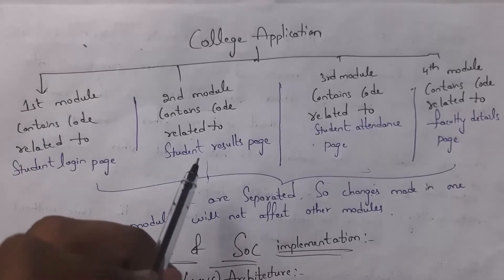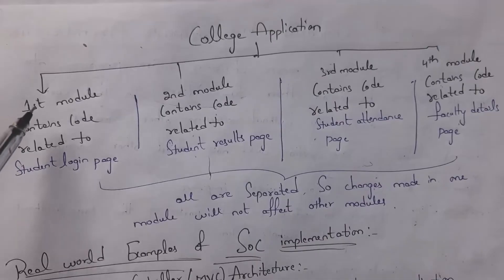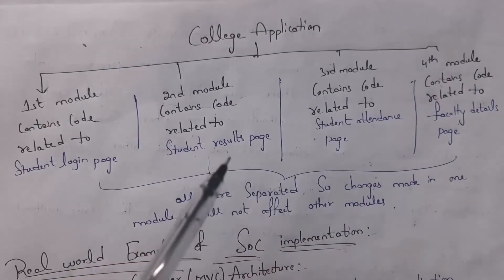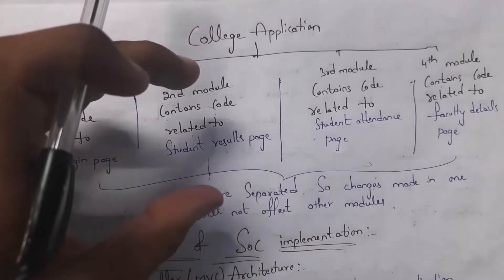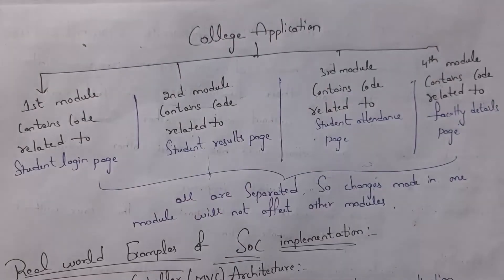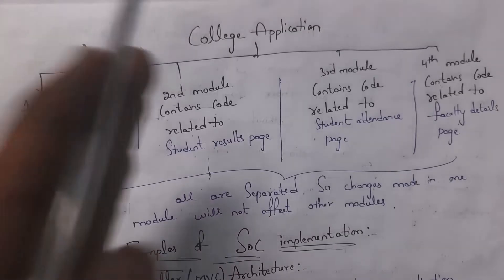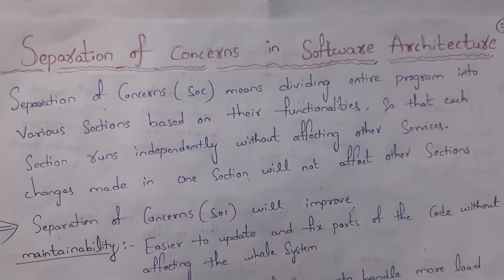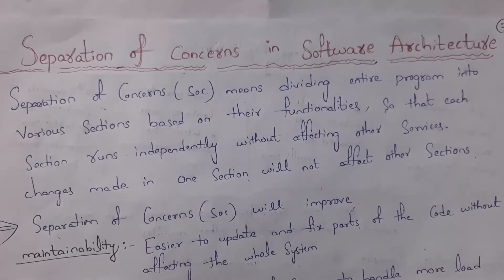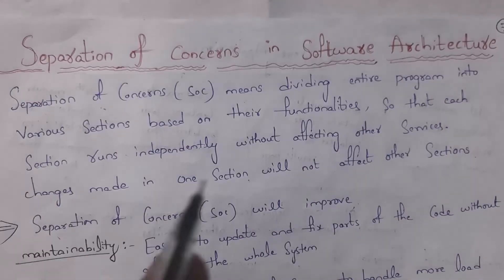For example, if I want to update the student results page, without changing the first, third, or fourth module, I will directly open the second module and update the code related to student results page. So changes made in one module will not affect other modules. For example, if the student attendance page is not working well, the remaining pages will still work because they are not related to each other — all are separated. So separation of concerns means dividing an entire program into various sections so that each section runs independently without affecting other services.